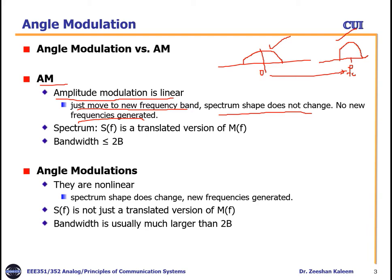No new frequencies are generated. The same frequencies are preserved; only the center frequency changes. For example, the upper frequency fu and the lower frequency fl remain the same — say five kilohertz. Similarly, after modulation we have fc plus fu and fc minus fu. So the number of frequencies will be the same; we didn't change the frequency content, just repositioned it. The spectrum S(f) of the modulated signal is just a translated version of the message signal spectrum M(f).